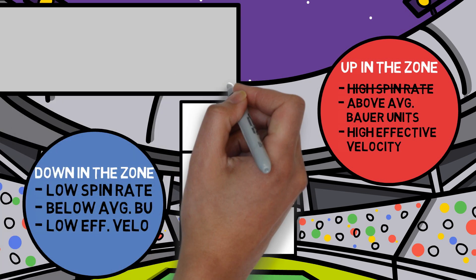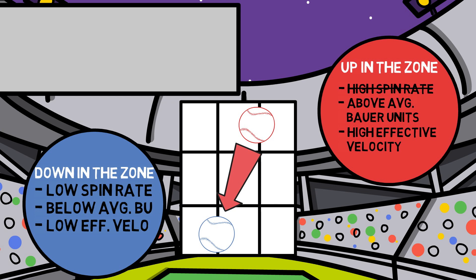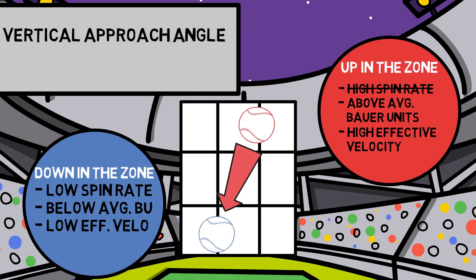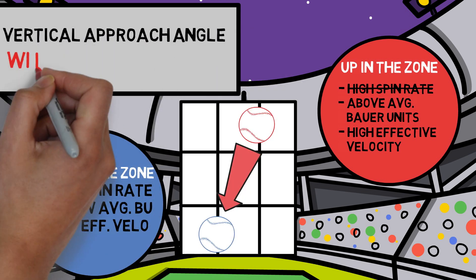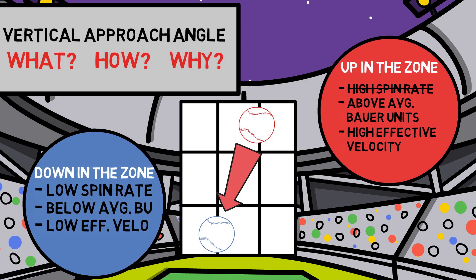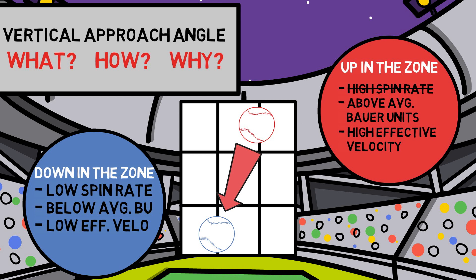First it was high spin rate, which was later replaced by above average Bauer units, and most recently we talked about effective velocity. And all of this was just the opposite for pitchers who will see the best results pitching low in the zone. But another challenger has entered the ring, and this statistic is called vertical approach angle. What is it? How can it be applied and why does it matter? All of that and more coming up in today's video.